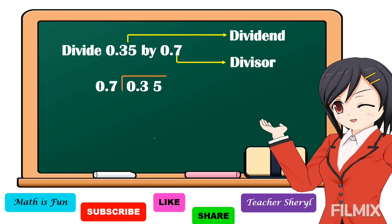In dividing decimals, make the divisor a whole number by moving the decimal point to the right of the last digit. So we're going to move the decimal point in our divisor. We move one decimal place in our divisor, then we're going to move also one decimal place in our dividend, and we're going to put a decimal point in our quotient.